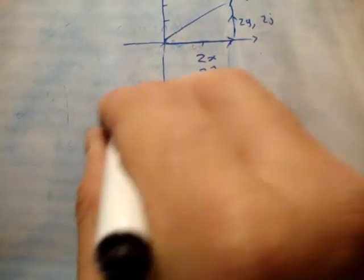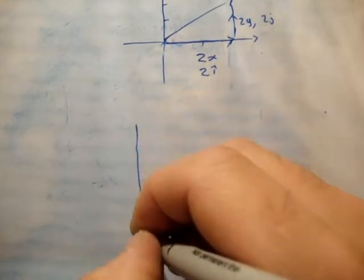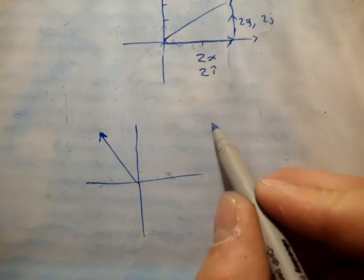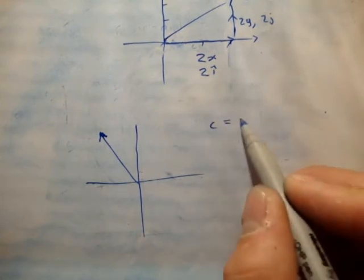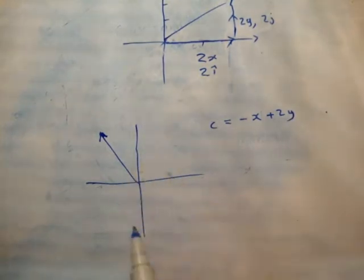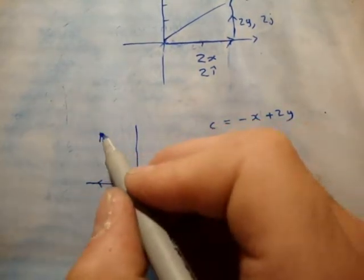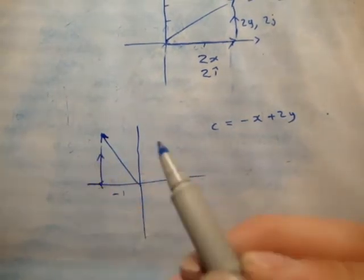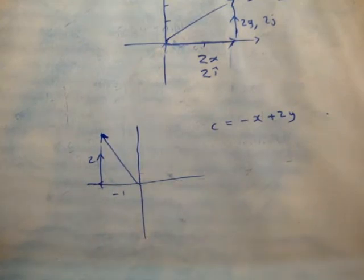You want to find out how big these component vectors are. Say this vector C equals minus x plus 2y. If you draw the x-component and the y-component, you know it's minus 1 in the x and plus 2 in the y — and that's how you resolve that vector.